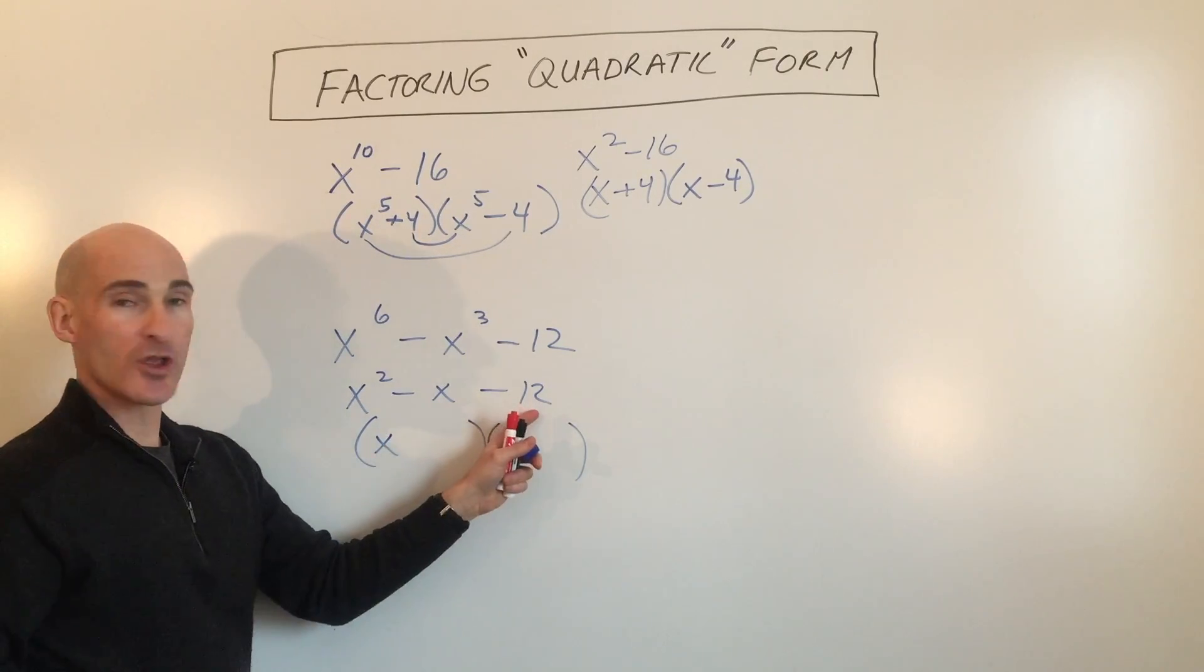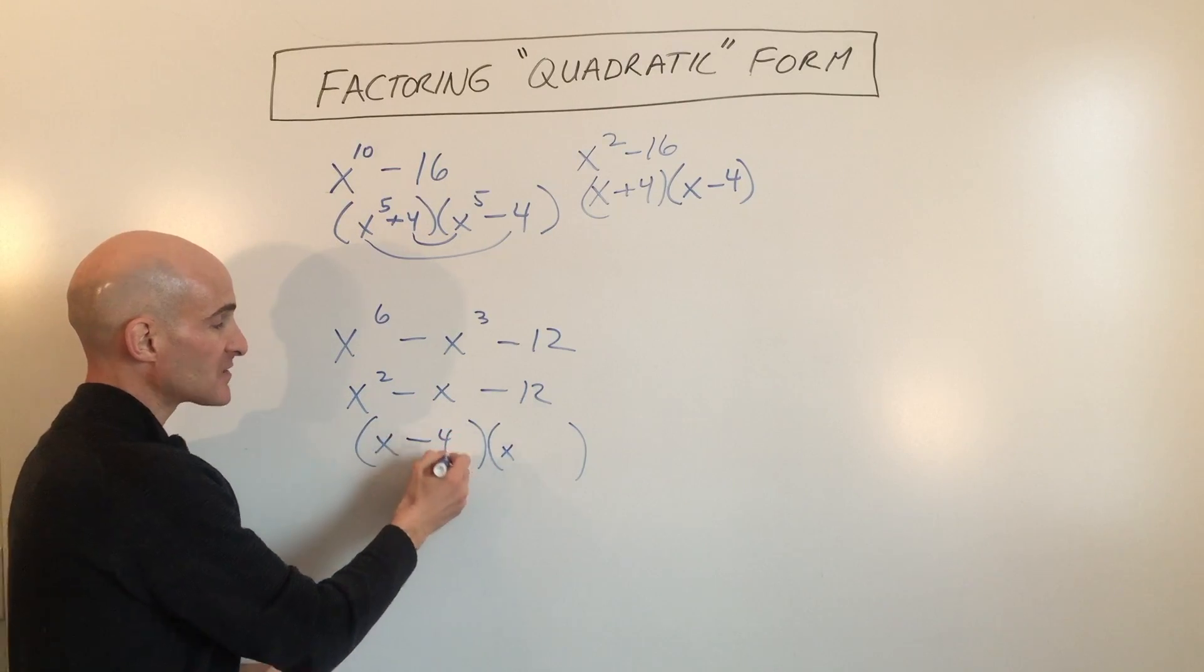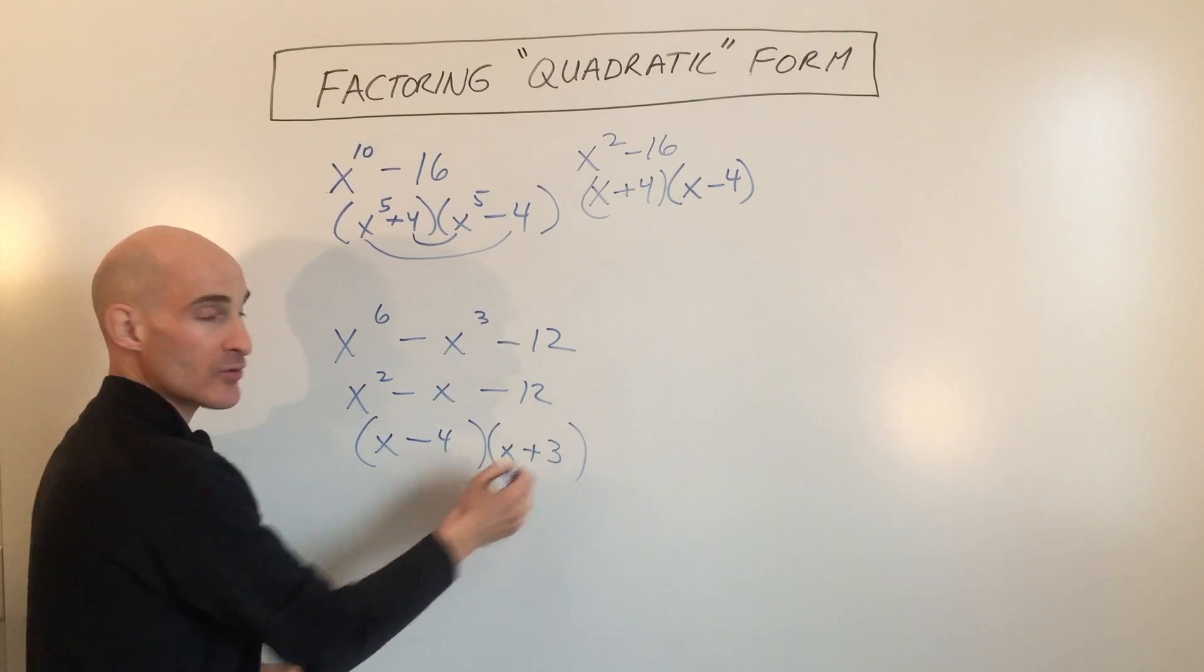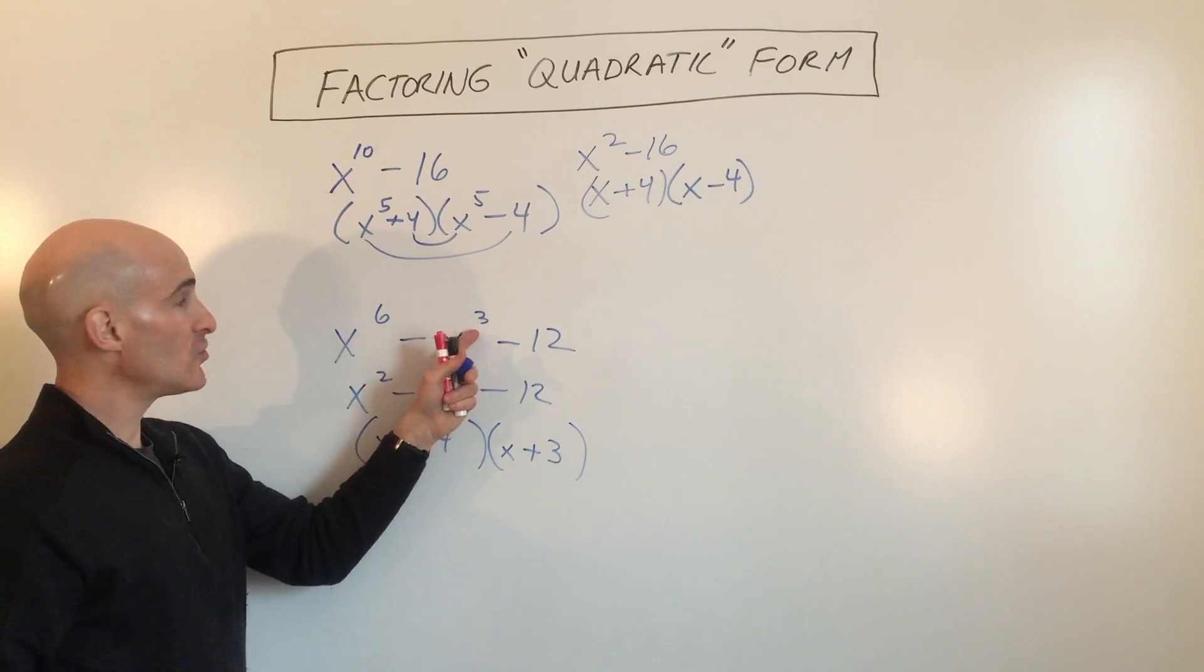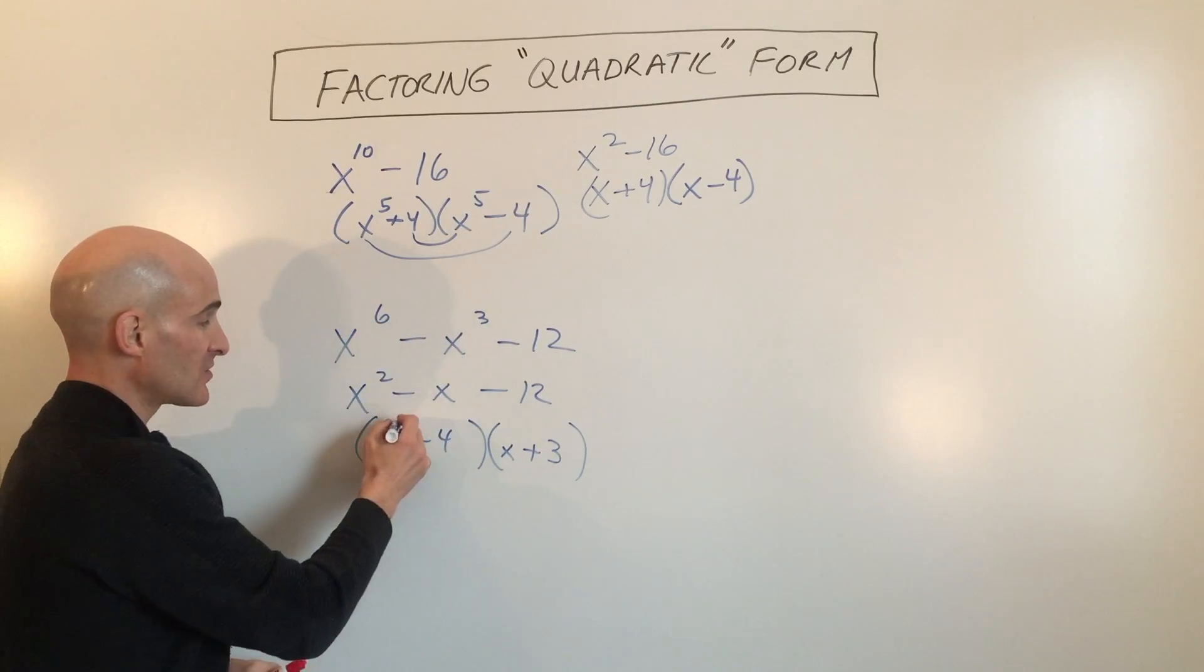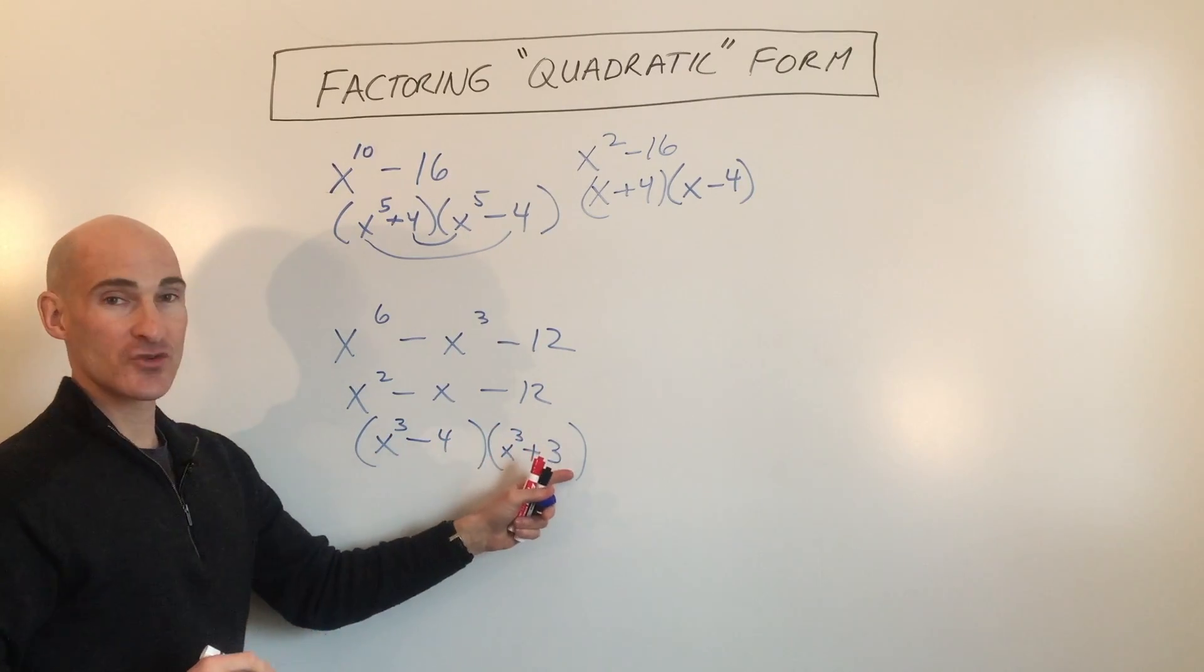We say what two numbers multiply to negative 12 but add to negative 1. That would be minus 4 and plus 3. The only difference here is it's x cubed and x to the 6th. So this is going to be x cubed minus 4 and x cubed plus 3.